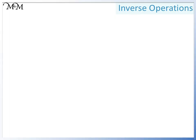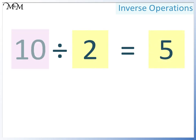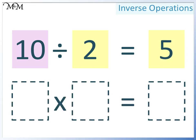Here's an example: 10 divided by 2 equals 5. A large number divided by a smaller number equals another smaller number. We want to write this as a multiplication. When we multiply, two smaller numbers times together to make a larger number.